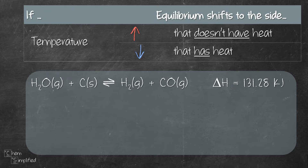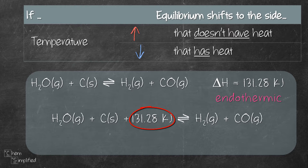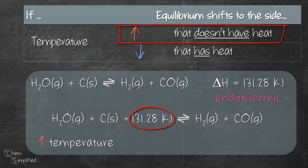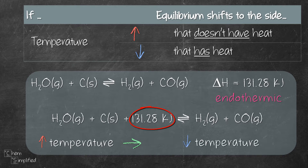This reaction has an enthalpy of positive 131.28 kJ. The positive value means it's an endothermic reaction, which means we can rewrite the equation and place the heat, 131.28 kJ, on the left-hand side as part of the reactants. If the reaction were exothermic, meaning delta H is negative, we would add that heat value on the right-hand side. So if we increase the temperature by heating up the system, the equilibrium shifts to the side that doesn't have heat — since 131.28 is on the left, it shifts to the right. If we reduce the temperature by cooling the reaction vessel, the equilibrium shifts to the side that has heat, which is the left-hand side.